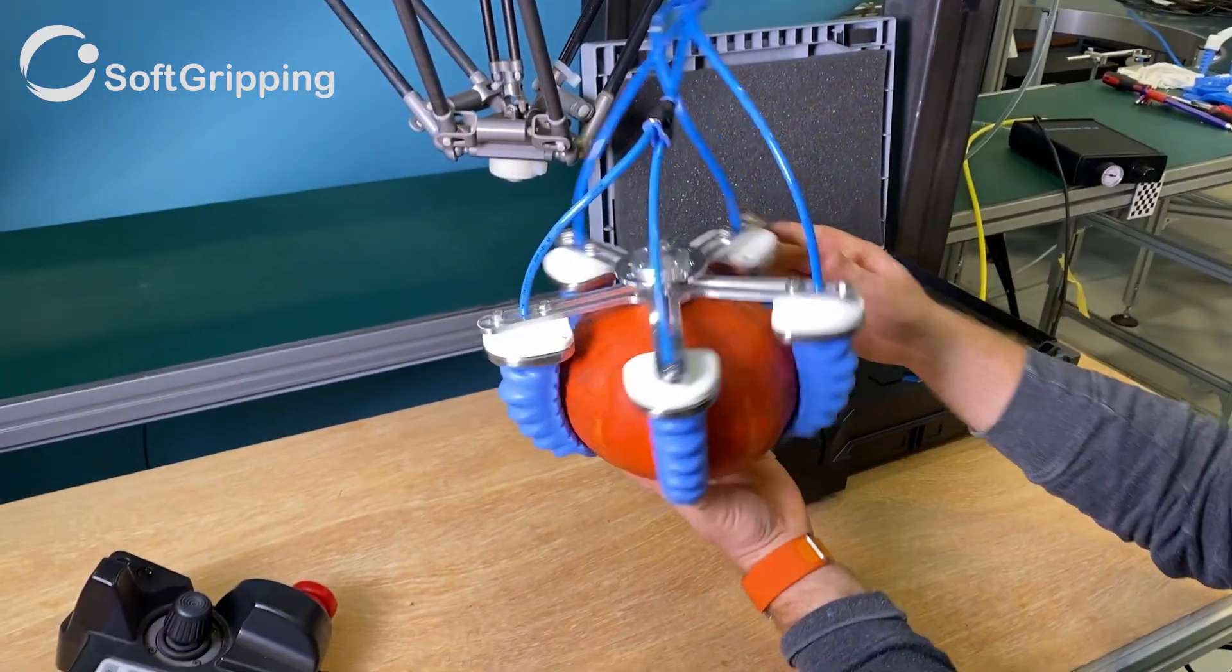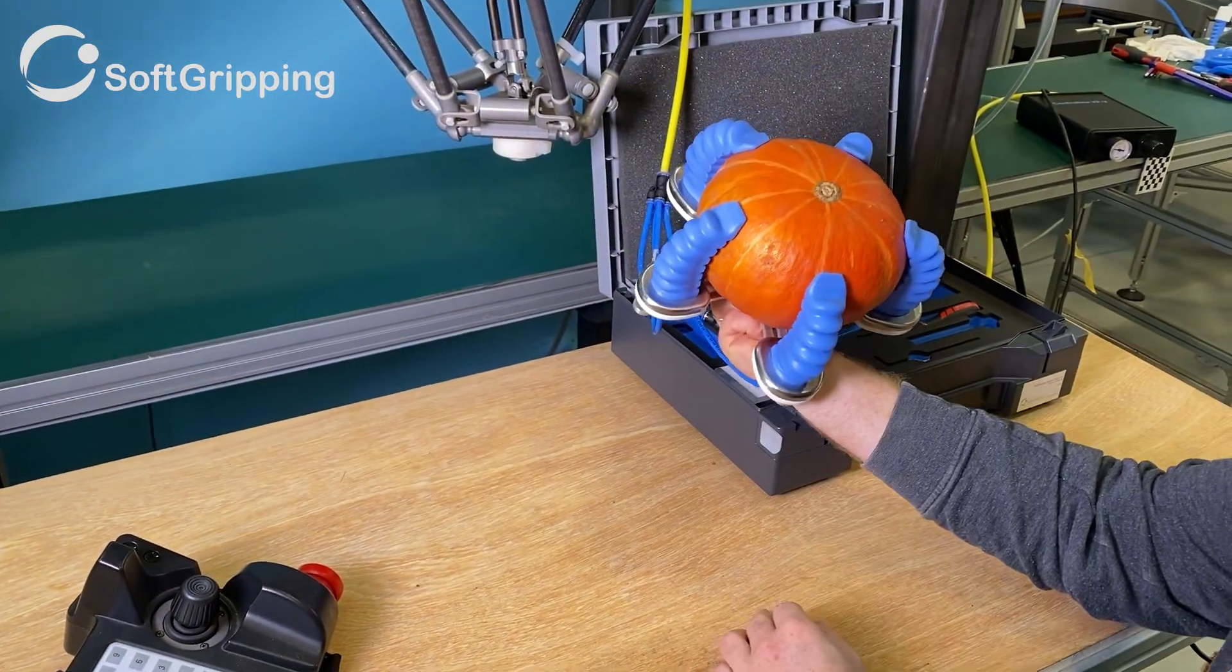This one looks good! So let's mount this soft actuator to the delta robot.